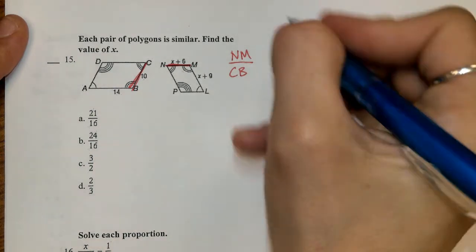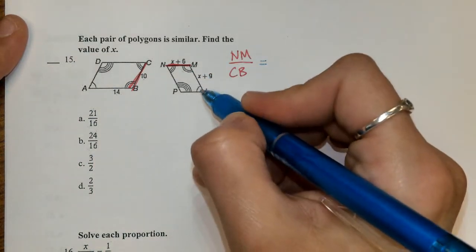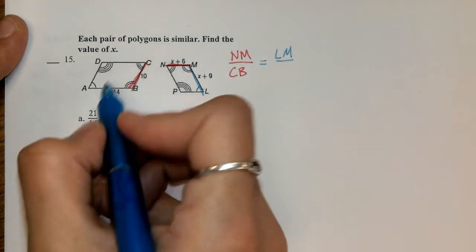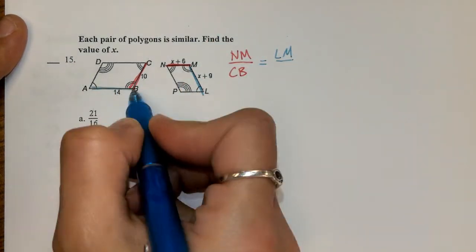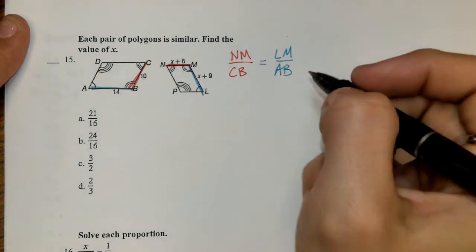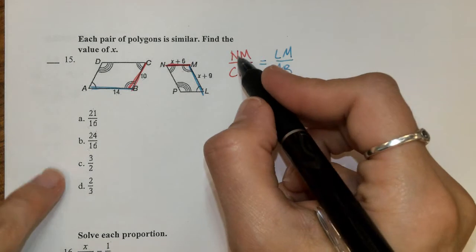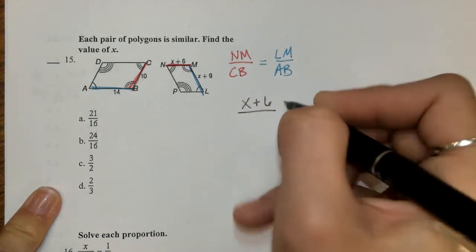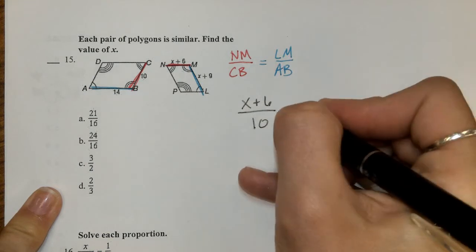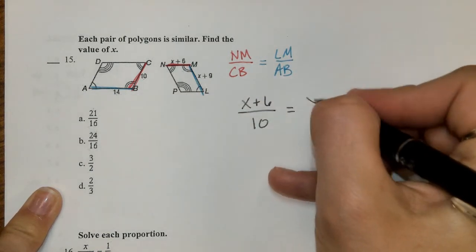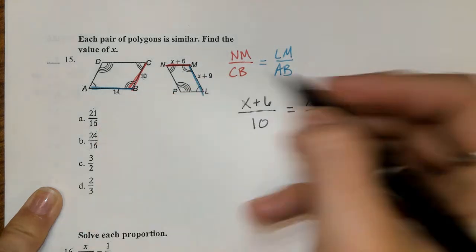My other 2 sides, between the 1 arc and the 2 arc, LM, will correspond between the 1 arc and the 2 arc, AB. So I'm not going to be too colorful on this one, I'm just going to go ahead and throw everything in here. We have NM, we have the X plus 6 over that 10. We're going to set that equal to LM, X plus 9, over 14.